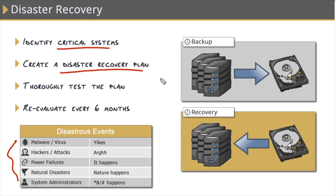Next, we need to create disaster recovery plans, and you'll have a few of these: one for your backup processes, one for your recovery processes, and one that contains general guidelines for what to do when a disaster strikes. Backing up is the process of taking a copy of your systems, their configurations, and all the data on them, and storing them on a hard disk.